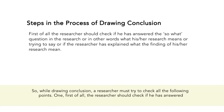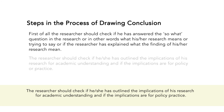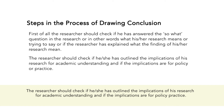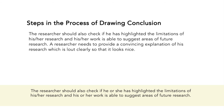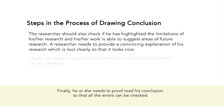While drawing a conclusion, a researcher must check all the following points: First, check if you have answered the 'so what' question — what his or her research means or is trying to say. Second, check if he or she has outlined the implications of the research for academic understanding, and if the implications are for policy or practice. The researcher should also check if he or she has highlighted the limitations of the research and whether the work is able to suggest areas of future research. A researcher needs to provide a convincing explanation of the research, stated clearly so it looks well-presented. Finally, he or she needs to proofread the conclusions so that all errors can be checked.